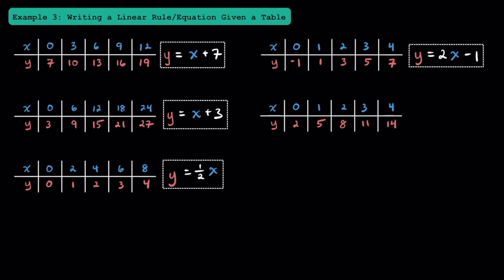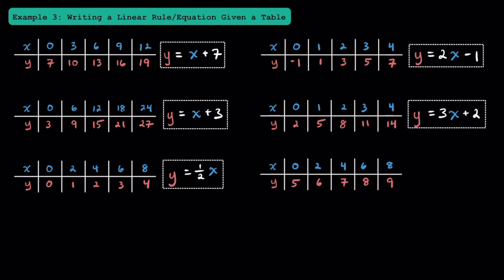Now that we've tried a few together, I'd like you to pause the video and try this one on your own. The linear equation you should have gotten is y is equal to 3 times x plus 2. It turns out if you multiply each of the x values by 3 and then add 2, you'll get each of the y values. And finally, take a look at this table and pause the video and try it on your own. The linear equation that fits this table is going to be y is equal to one-half of x plus 5.